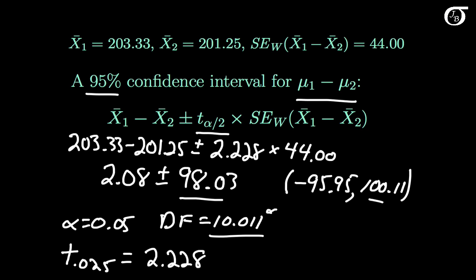We can be 95% confident that this difference, μ1 - μ2, lies somewhere between -95.95 milliliters and 100.11 milliliters. μ1 - μ2 is the difference in the true mean swelling between pigs treated with antivenom and pigs treated with saline.